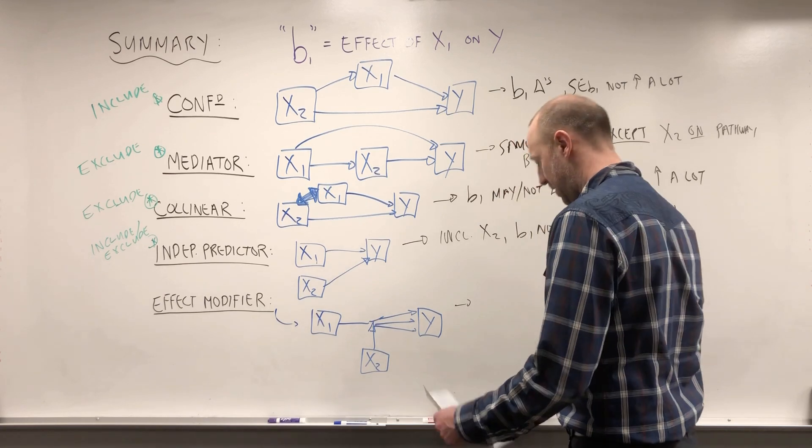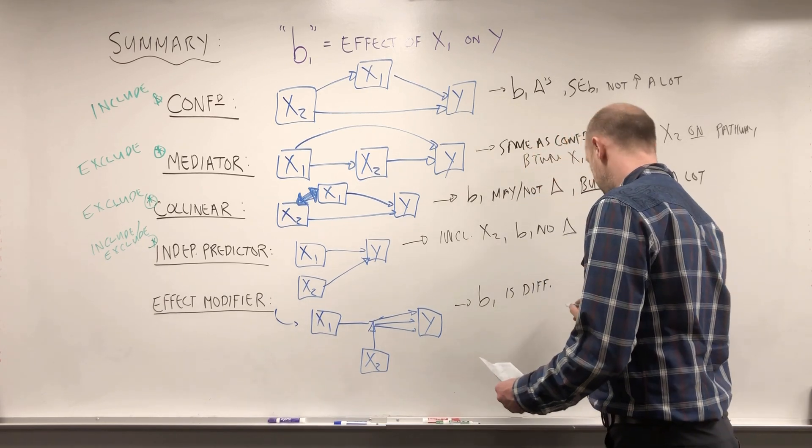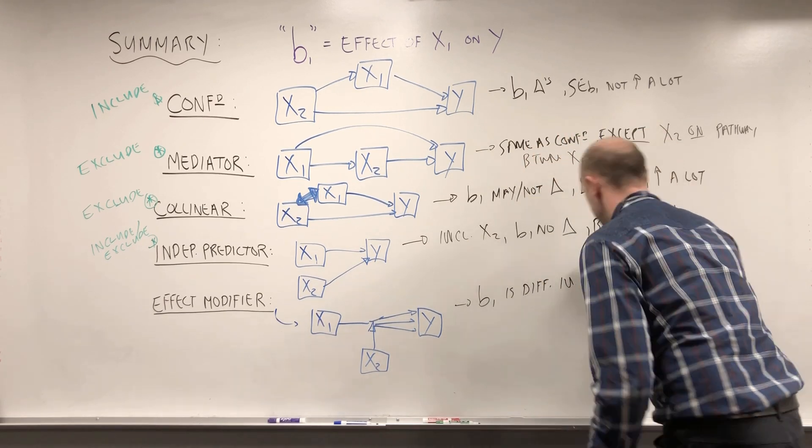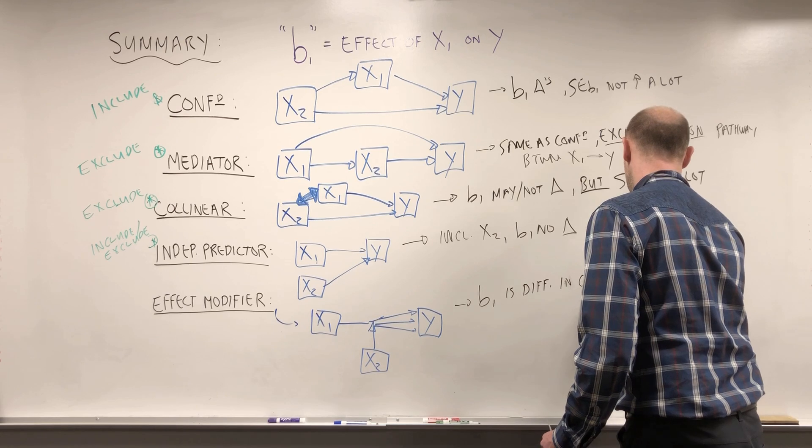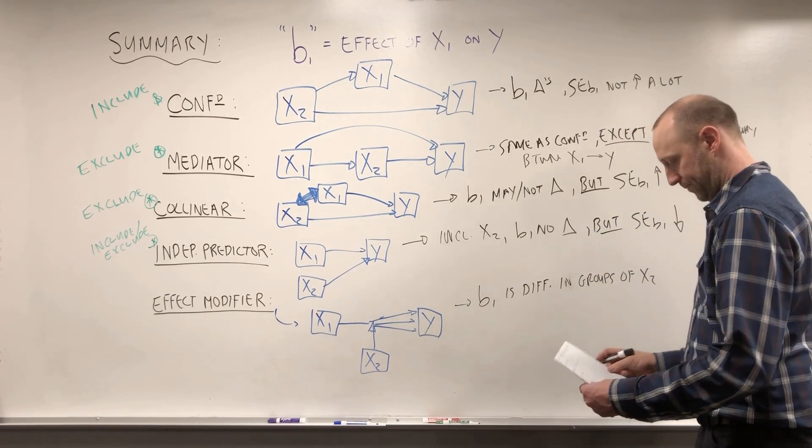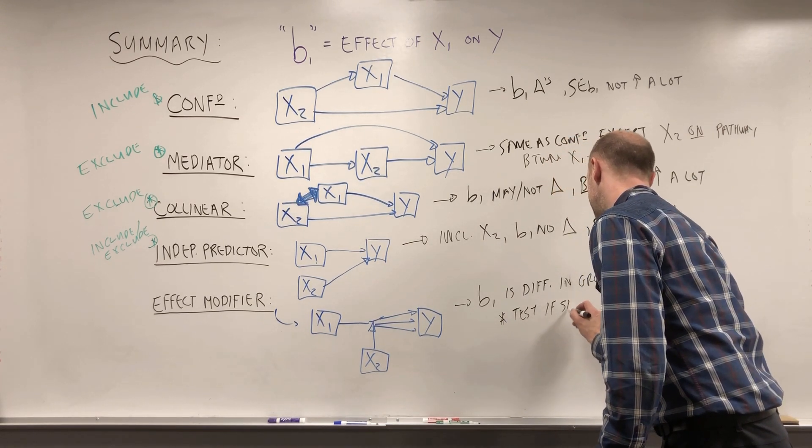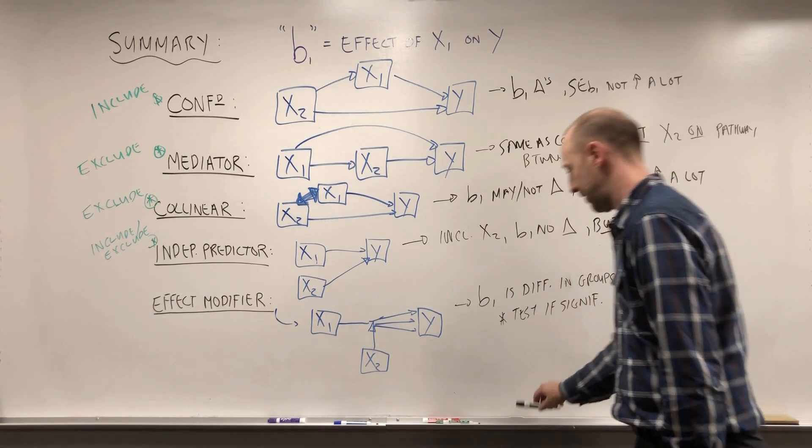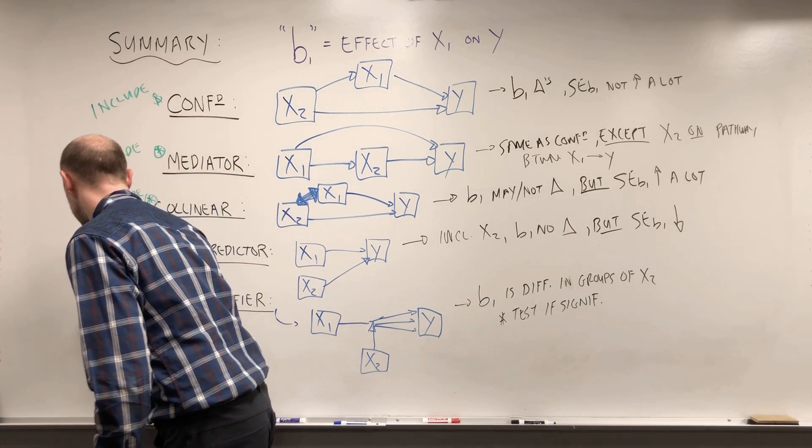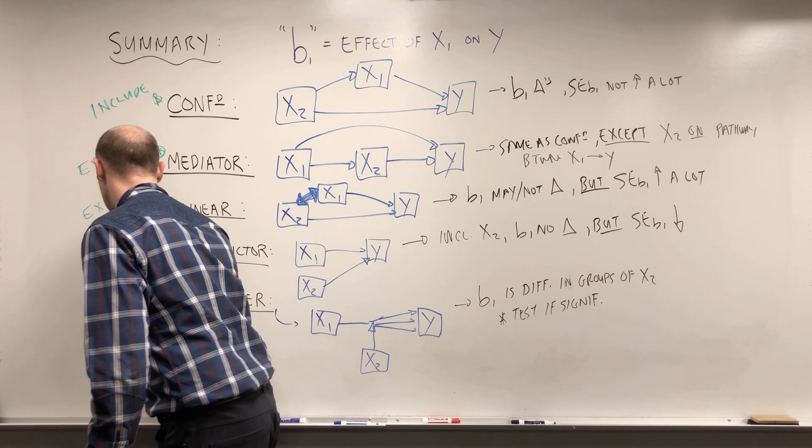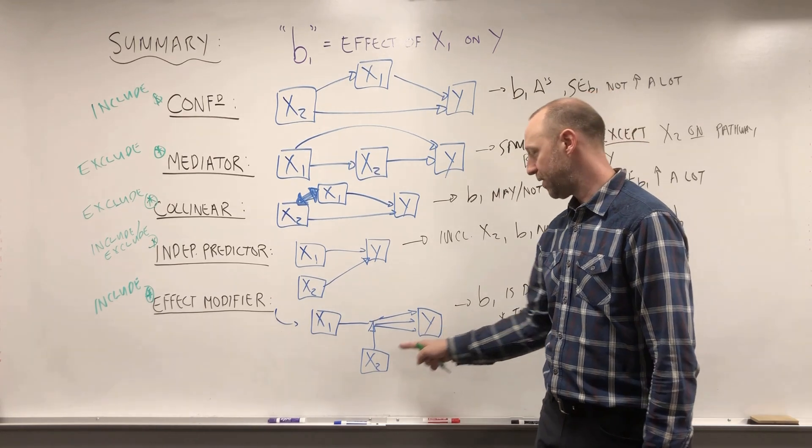So again, what this implies is that B1 is different in the strata or groups formed by X2. And we can test if it's significant. So we can test if it's statistically significant. And again, with these we said we generally want to include them in the model.